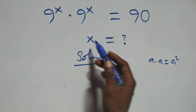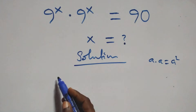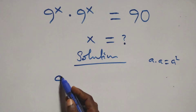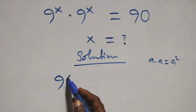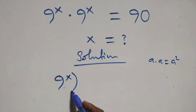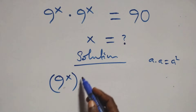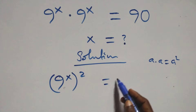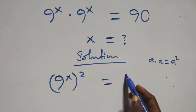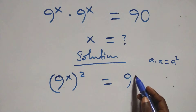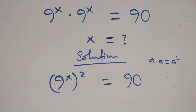This same thing — multiplying — we can write as 9 raised to the power x, all squared, then equals to 90 on this side.